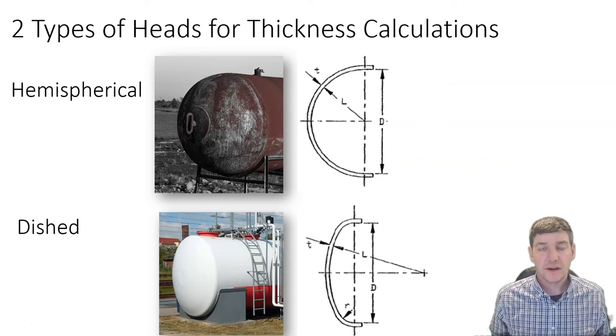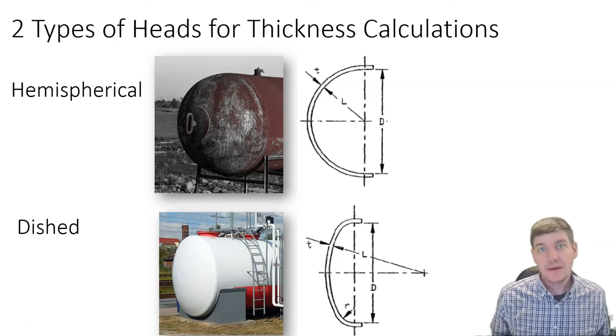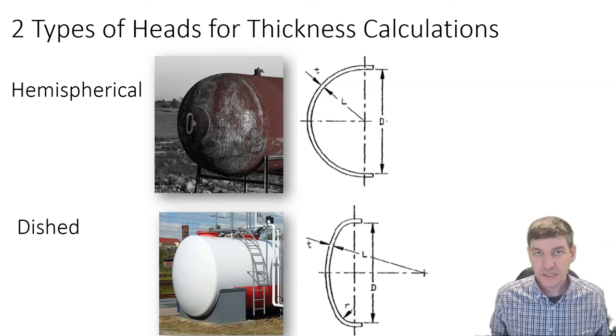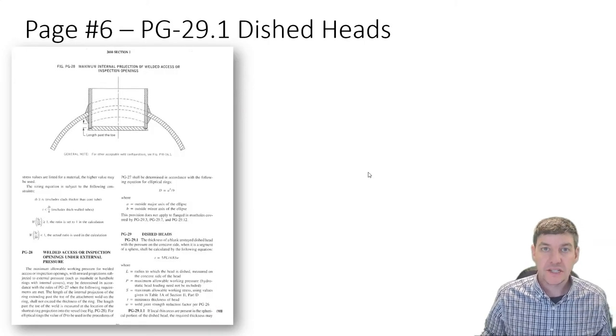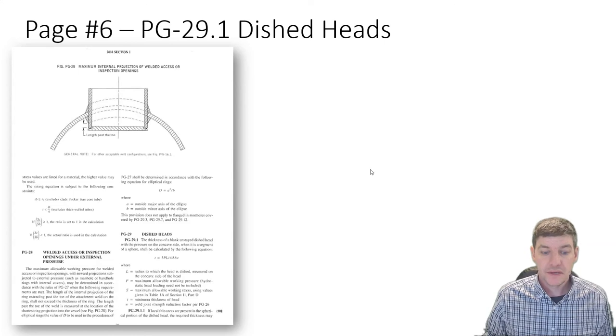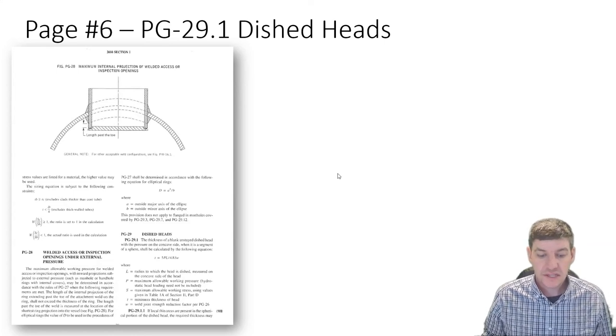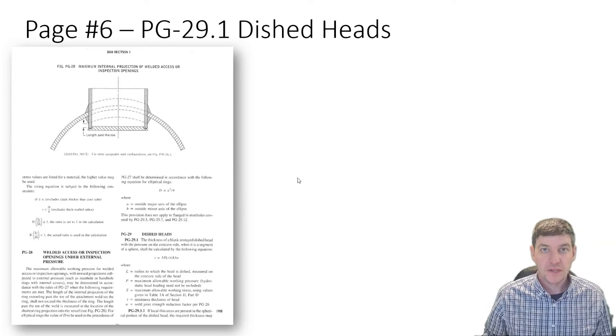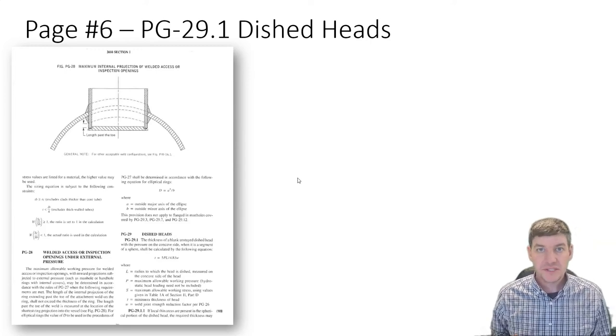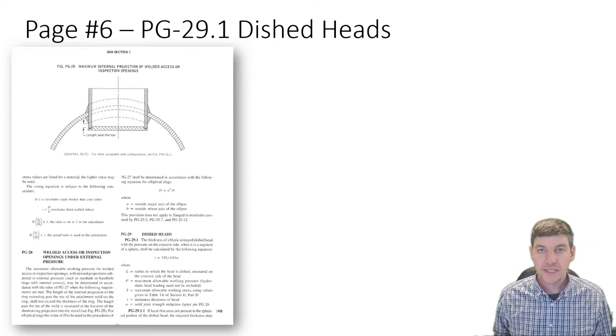We're going to start our calculations with dished heads because ASME code has them listed first. If we go to page 6 of your handout, you have a section on dished heads, PG 29.1. Previously we were in 27 which was cylindrical vessels, now we're into 29.